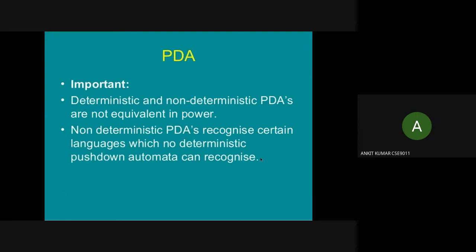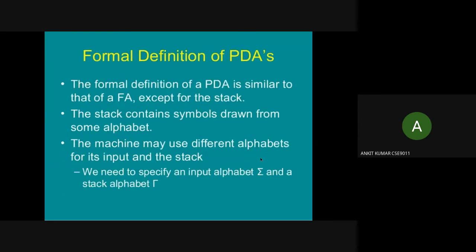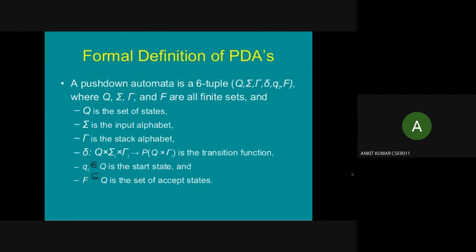The formal definition of a PDA is similar to that of an NFA except for the stack. The stack contains symbols drawn from an alphabet, and the machine may use different alphabets for its input and stack — an input alphabet sigma and a stack alphabet tau. A pushdown automaton is a 6-tuple (Q, Σ, Γ, δ, q0, F), where Q is a finite set of states, sigma is the input alphabet, tau is the stack alphabet, delta is the transition function mapping Q × Σ_ε × Γ_ε to subsets of Q × Γ_ε, q0 is the start state, and F is the set of accept states.